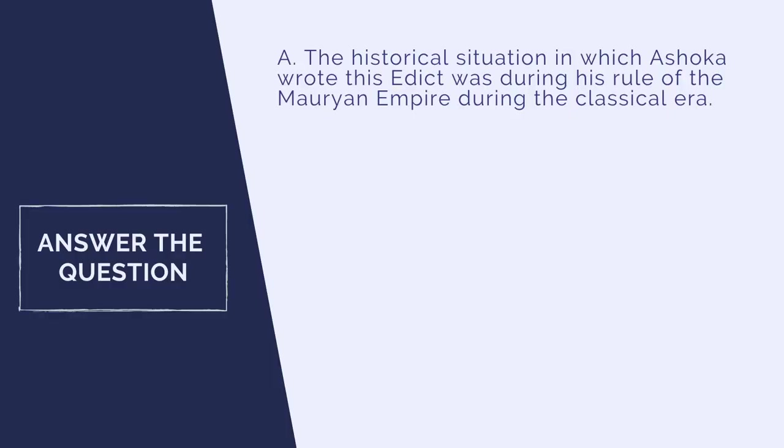Let's look at question A: Describe the historical situation in which Ashoka wrote this edict. For the A in ACE, you want to literally reword the question into a claim sentence. For example: 'The historical situation in which Ashoka wrote this edict was during his rule of the Mauryan Empire during the classical era.' Then cite evidence to prove you know what you're talking about. Evidence needs to be specific facts, names, events, people, and places that prove to the AP graders and to your teacher that you know your stuff. This is where you need a name drop — vague or fluffy talk will get no points.